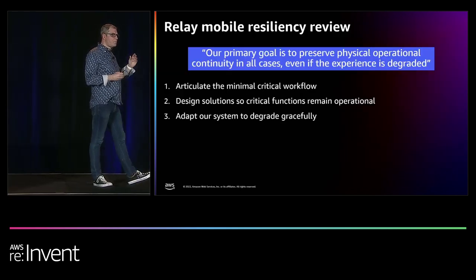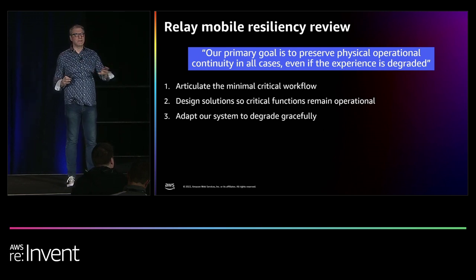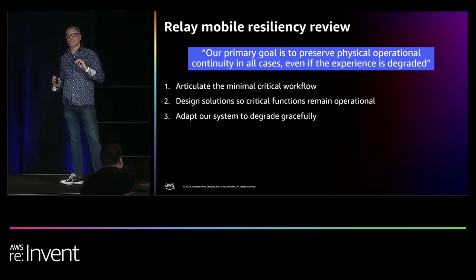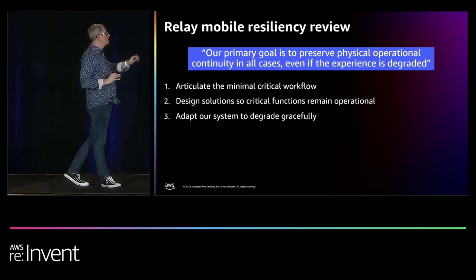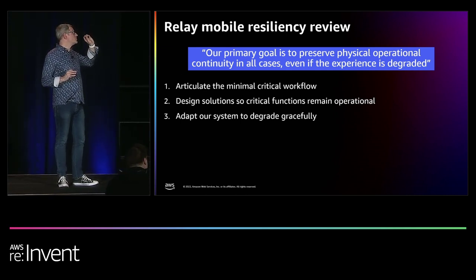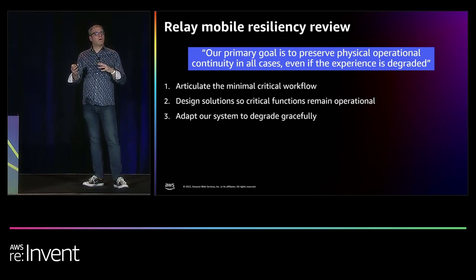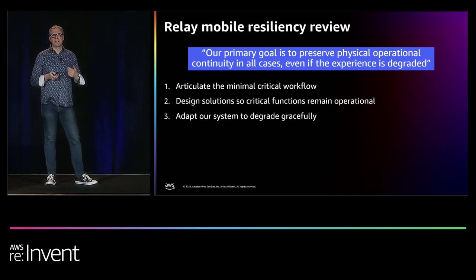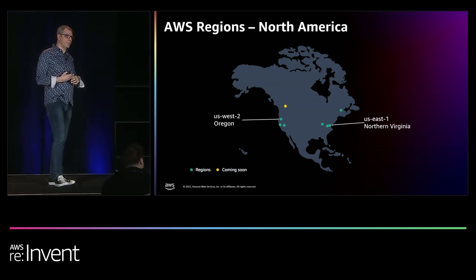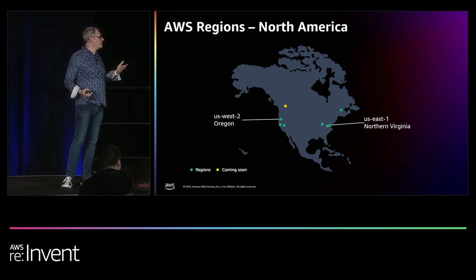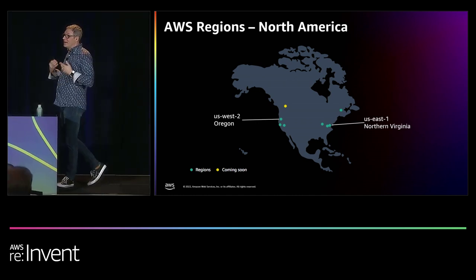Their primary goal from the review was to preserve physical operational continuity, even if the experience is degraded. The three steps: articulate the minimum critical workflow — which parts have to work; design solutions so those critical parts remain operational; and adapt the system so that when non-critical parts stop working, the system can still operate — that's what degraded experience means. They went with a multi-region approach. They were already deployed in US-East-1, and they decided to also deploy to US-West-2 in Oregon. AWS has 30 regions all over the world.